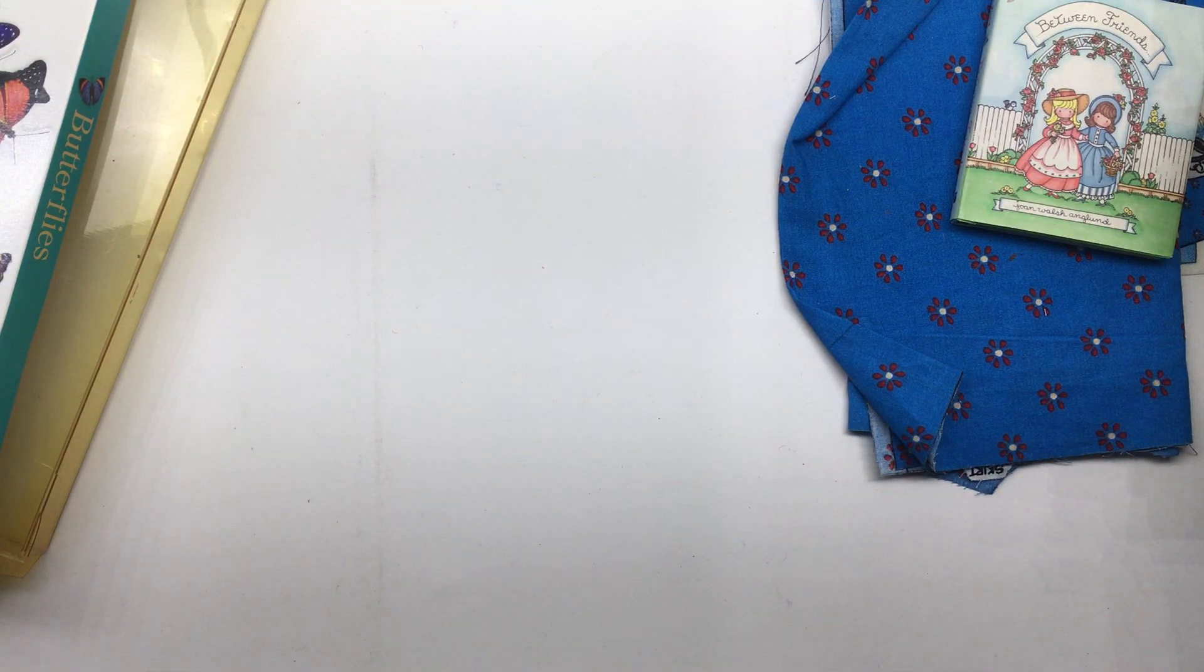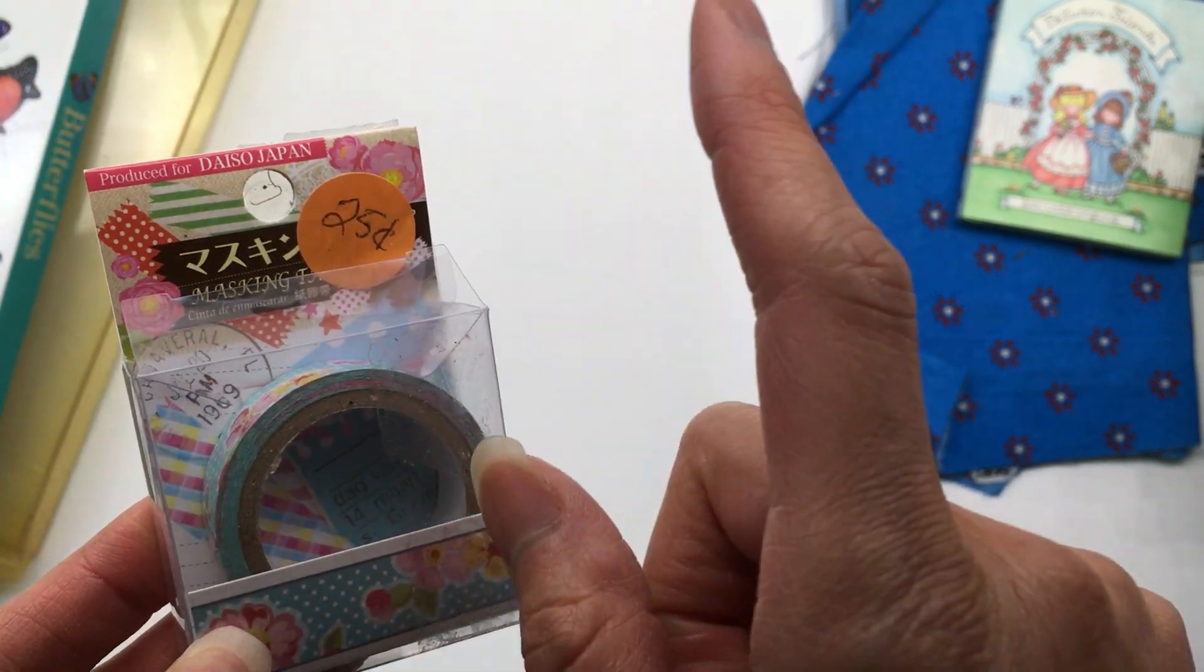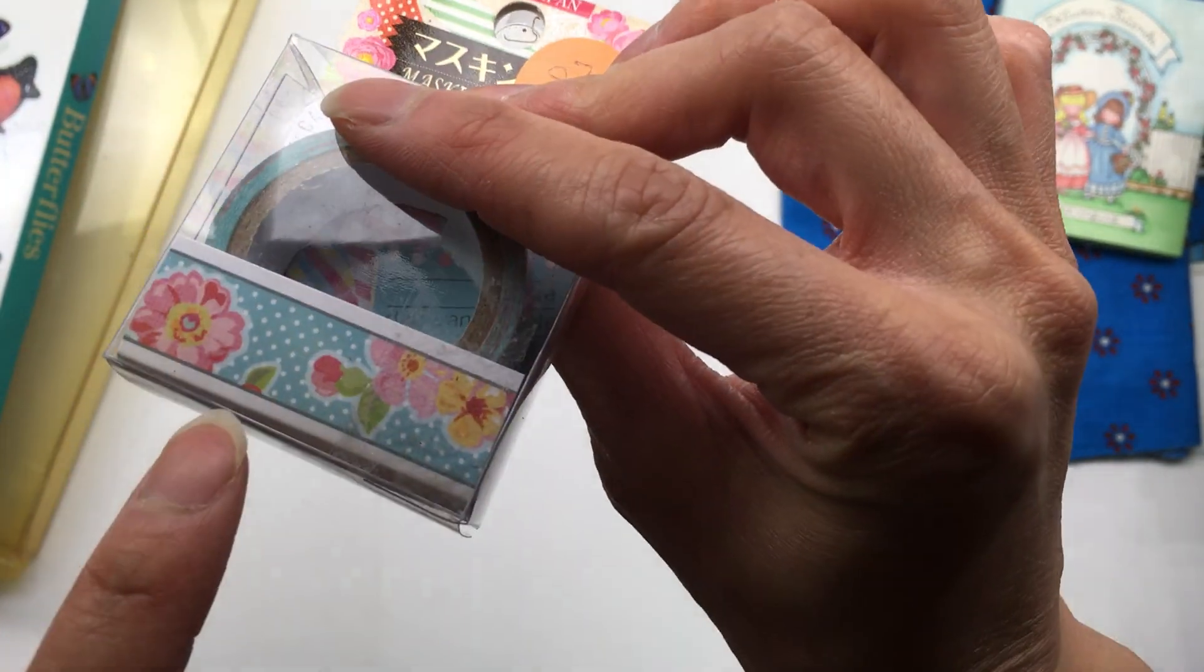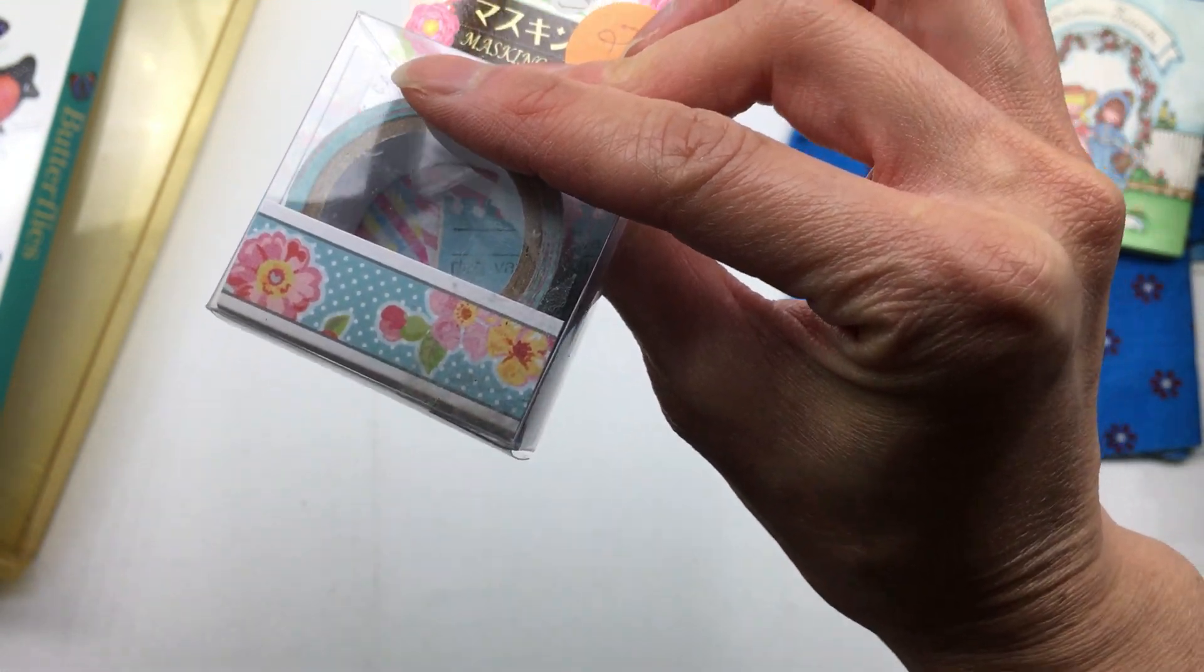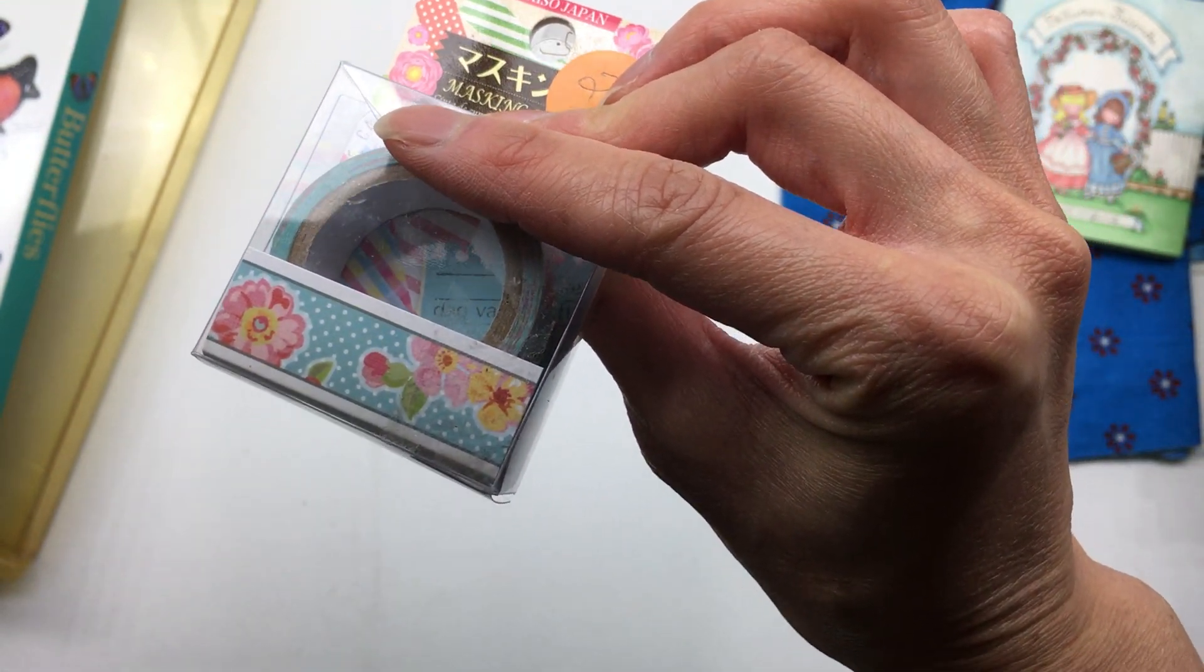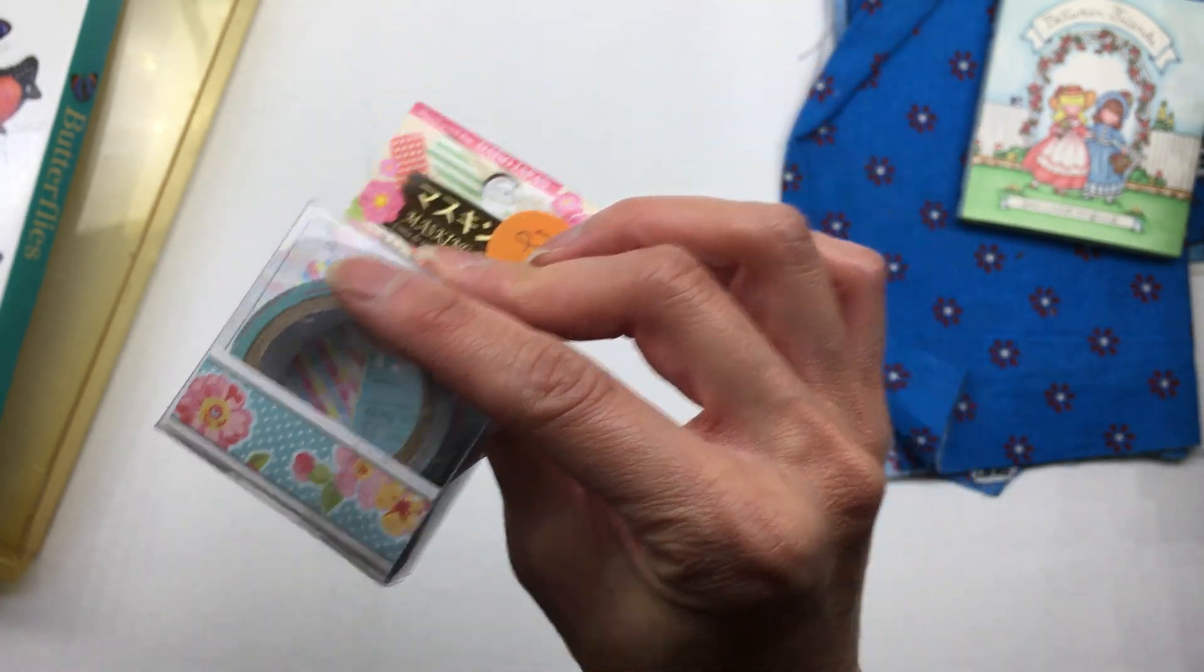And then the last thing I found there was this washi tape, 25 cents, and it is just a Daiso one, but I think this design would go cute with vintage cards. It reminds me of vintage cute little vintage cards and things like that.